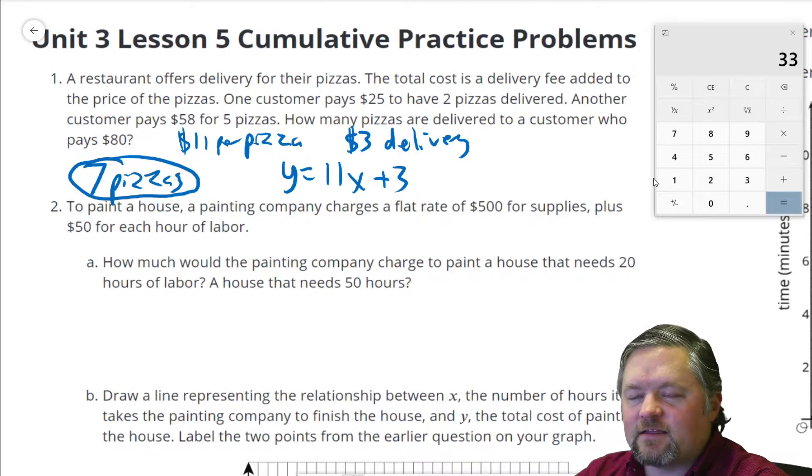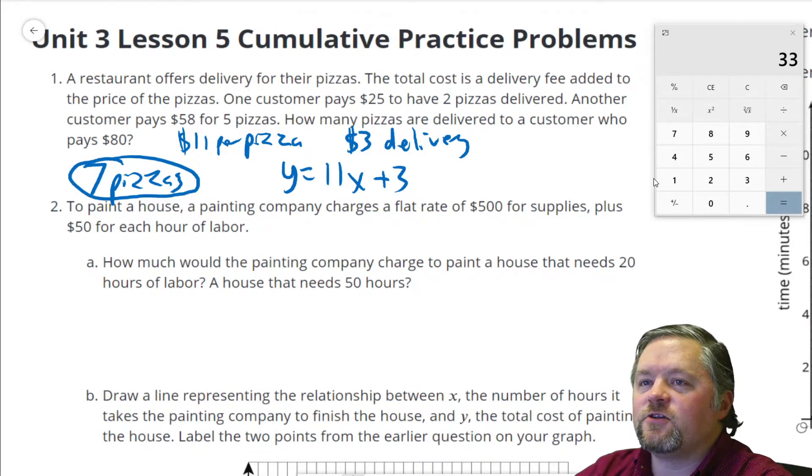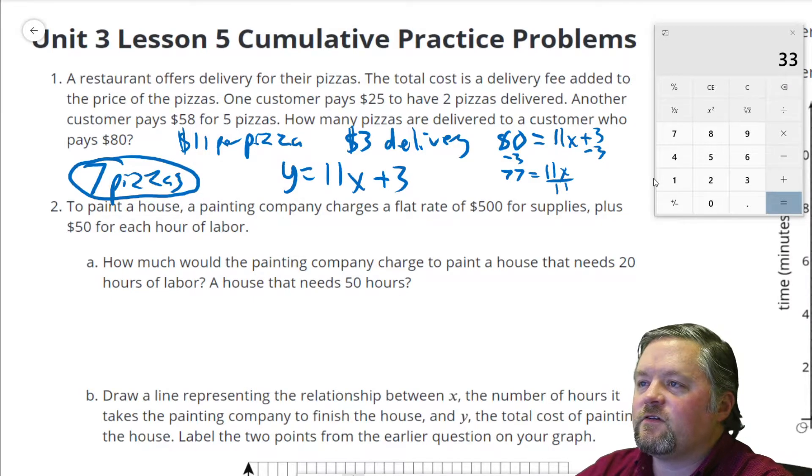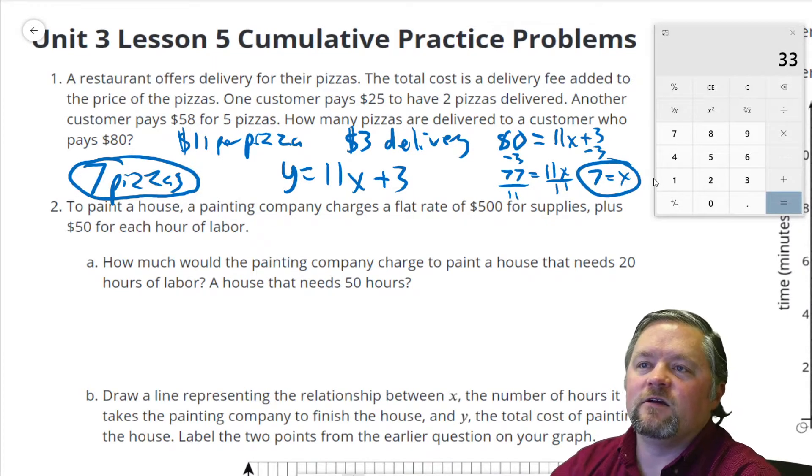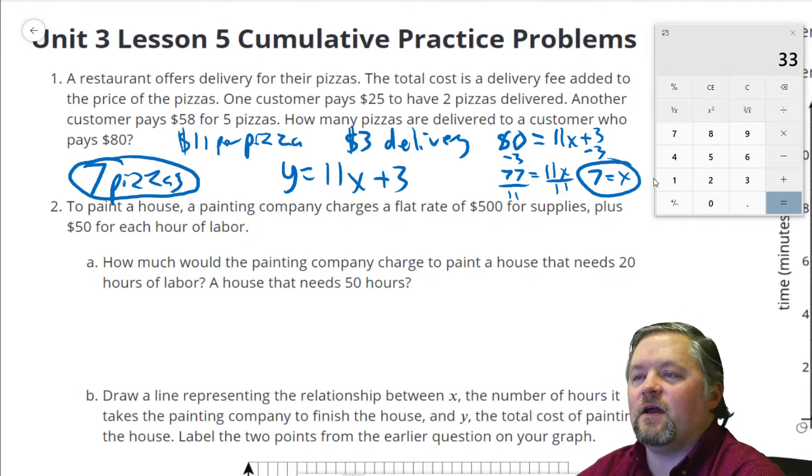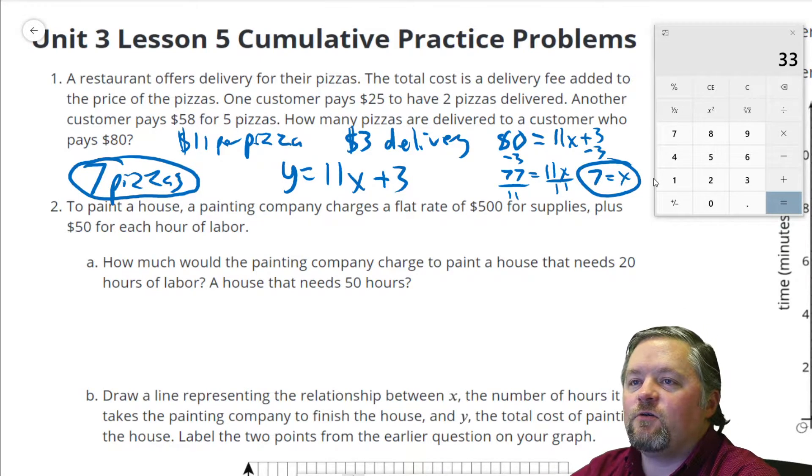We can check that quickly by plugging that into our equation too. And that's a total, so it would be $80 equals $11x plus $3. Subtract $3 from each side. $77 equals $11x. To isolate the x, we divide by $11, divide by $11. $7 equals x. Hey, that's the same thing we got over here. We thought about it, solved it that way, and we used the equation and solved it that way, got the same answer. Seven pizzas either way.